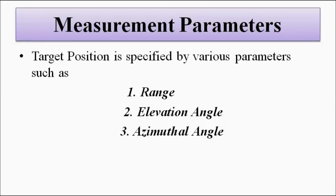The first one is range — it is essentially the separation distance from the radar installation point to the target. The second is elevation angle, which is the height of the target from the ground level. The third is azimuthal angle, which is the orientation — exactly where the target is present in space in terms of clockwise or anti-clockwise movement about a certain reference axis.